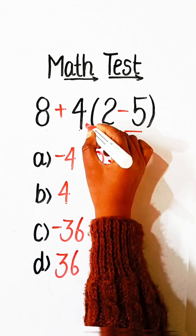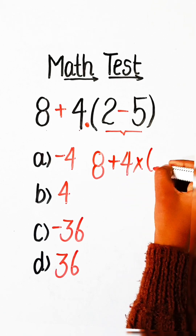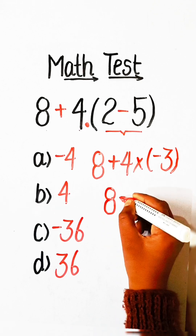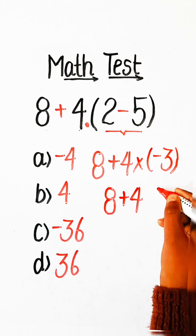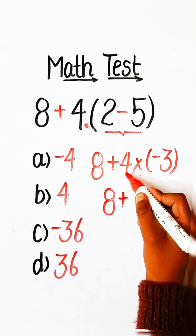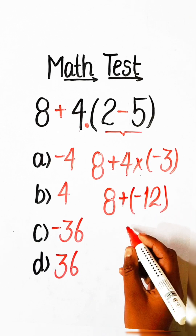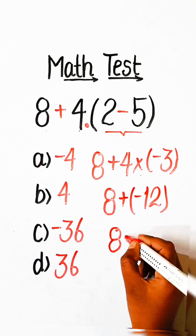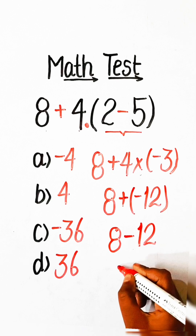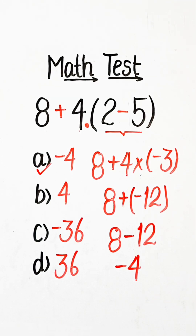2 minus 5 is minus 3. So we have 8 plus 4 multiply by minus 3, which is minus 12. 8 plus minus 12 is minus 4. So Option A, minus 4, will be the correct answer.